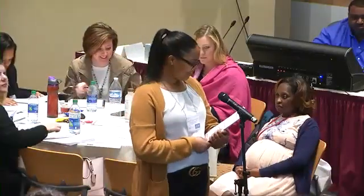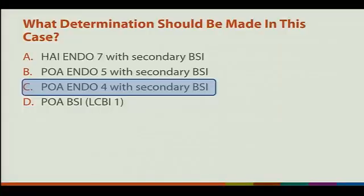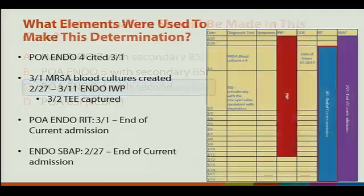So what determination should be made in this case? C — endo-4 with a secondary BSI.